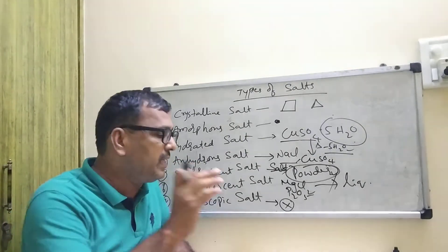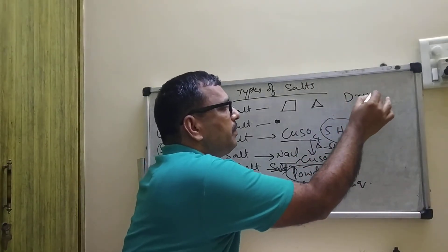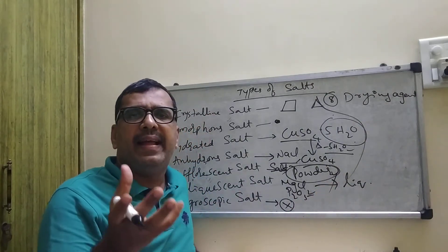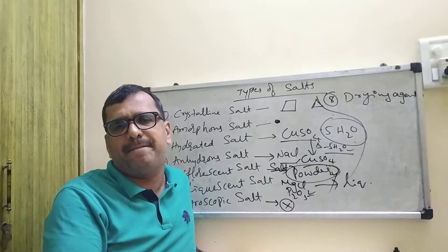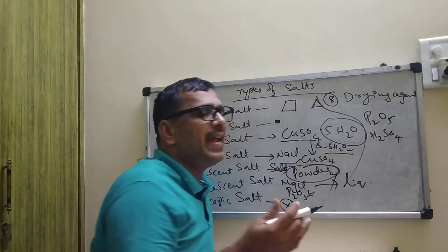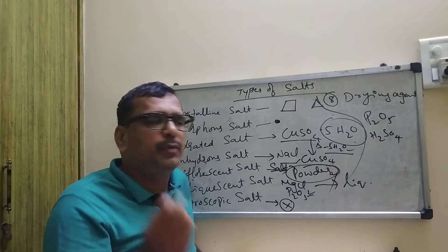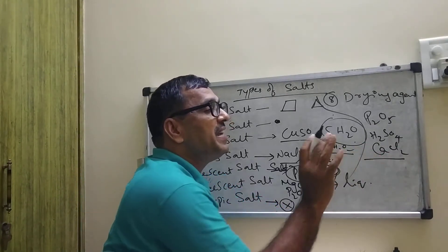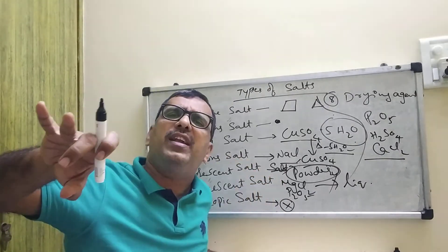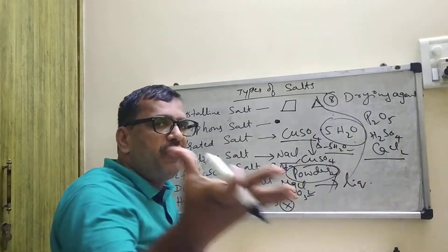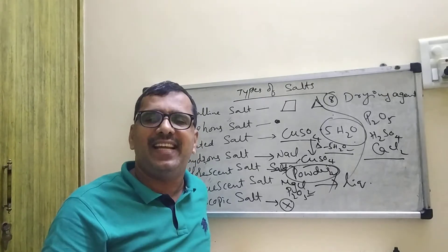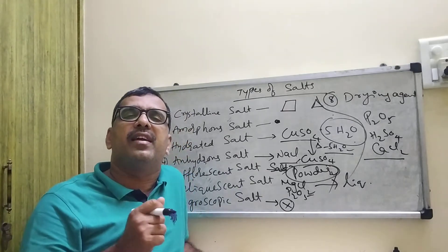At this stage I would like to introduce another concept — the drying agent. What do you mean by a drying agent? A substance which absorbs moisture from another substance, such as P2O5 or H2SO4. It absorbs moisture but does not change its state, similar to how an oven removes water. Drying agents absorb moisture from other substances using instruments like a drying tube.